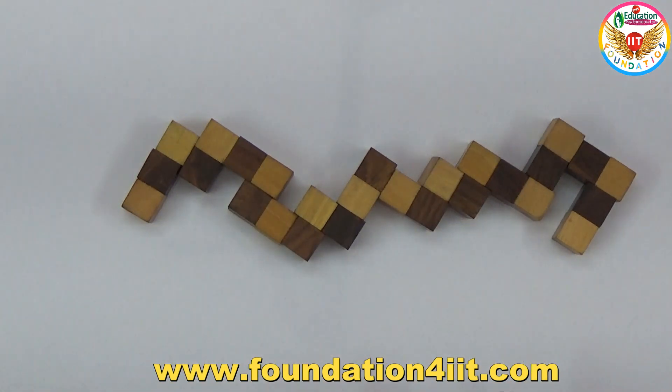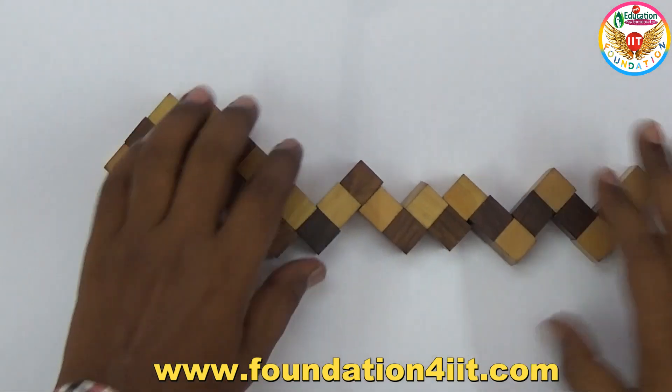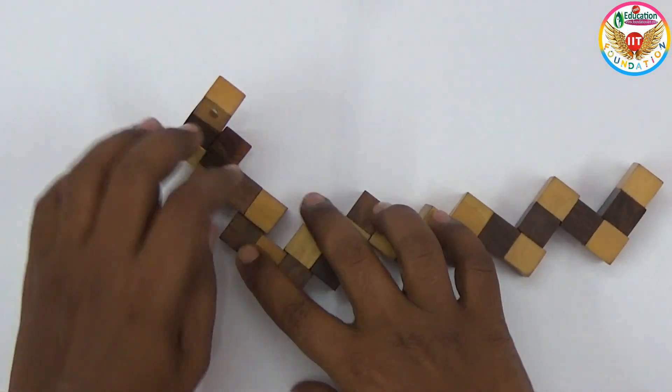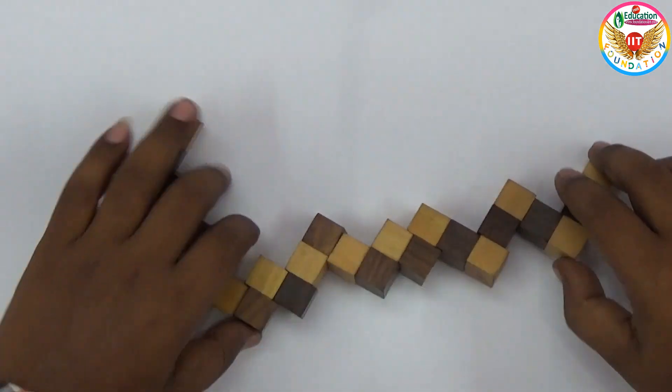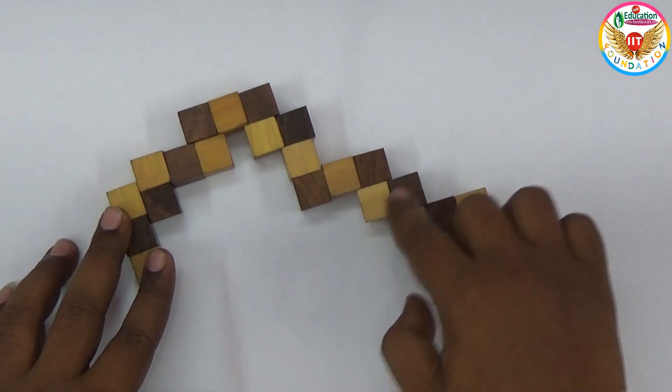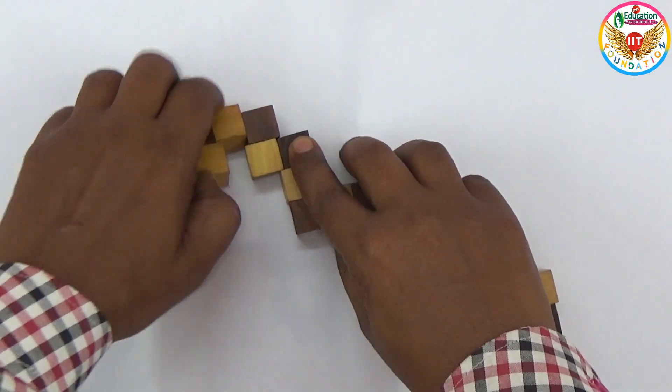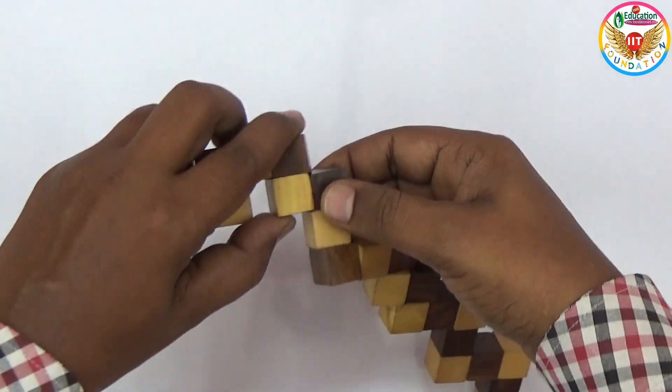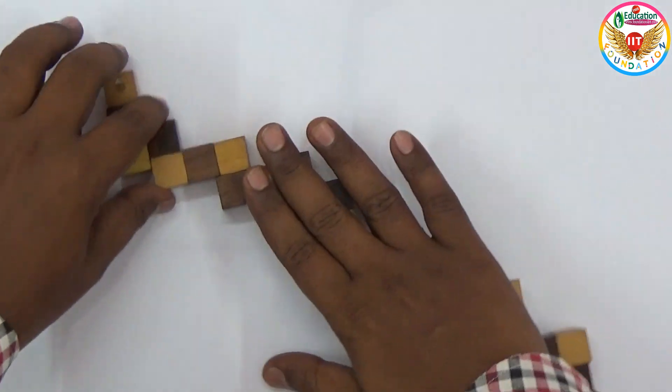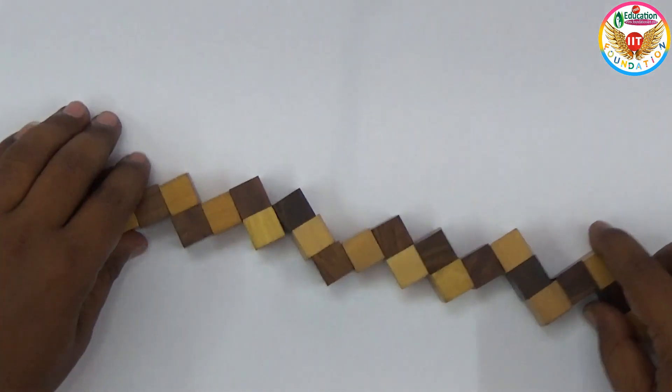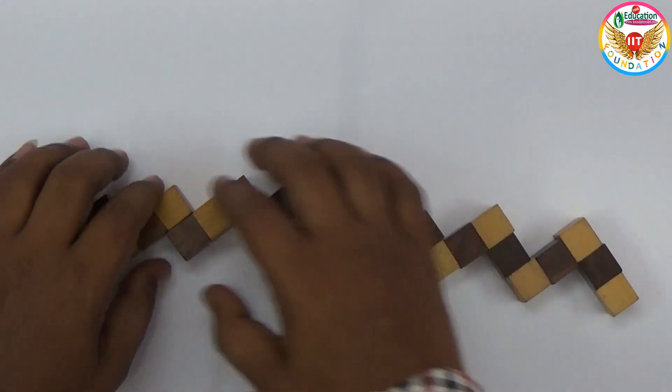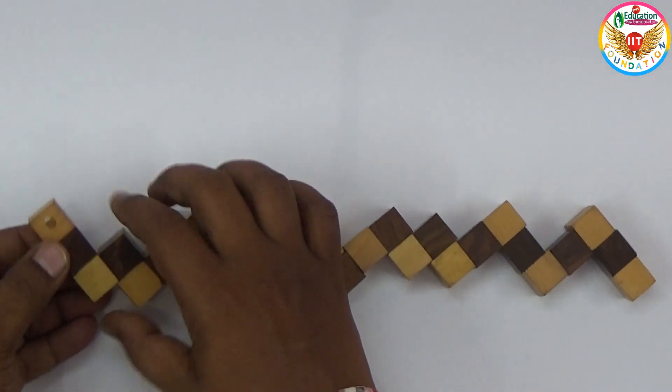First, we have to convert this into a snake shape - that means an up and down type. Only then we can make this. This goes up against the side, so like a snake type only we should make. Here also we should rotate in this way. Finally, like a snake type only, we need to arrange it however it is possible. Throughout, inside there is a thread available.